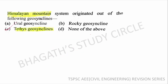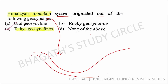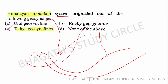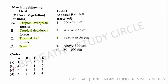Next question: The Himalayan system originated out of which of the following? The Himalayan mountains formed from a geosyncline depression. Tethys Sea was a geosyncline. Option C is the correct answer.